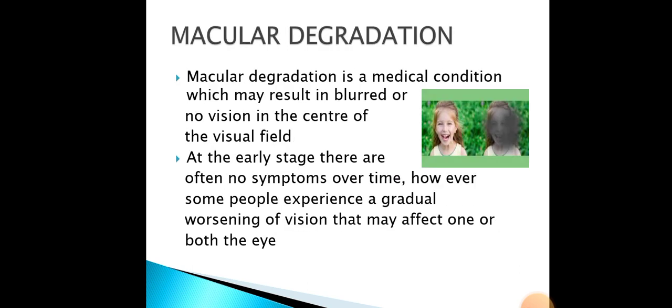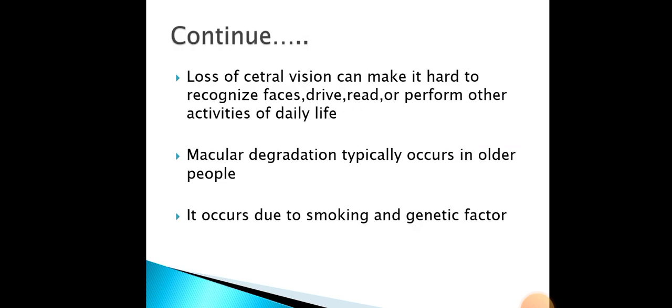What are the reasons for blindness? There are many diseases that cause blindness. Among these, one major reason is macular degeneration. Macular degeneration is a medical condition which may result in blurred or no vision in the center of the visual field. At the early stage, there are often no symptoms. However, some people experience a gradual worsening of vision that may affect one or both eyes. Loss of central vision can make it hard to recognize faces, drive, or perform other activities of daily life. Macular degeneration typically occurs in older people, mainly due to smoking and genetic factors.